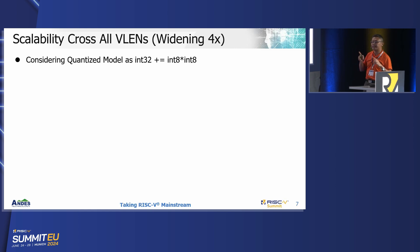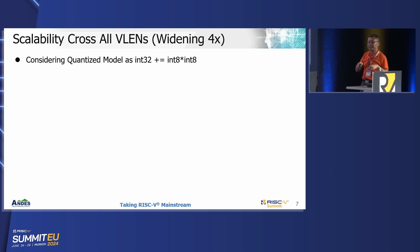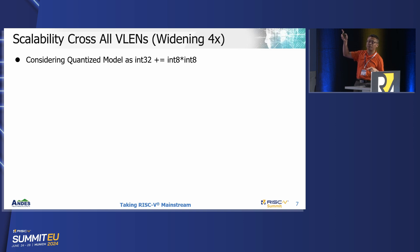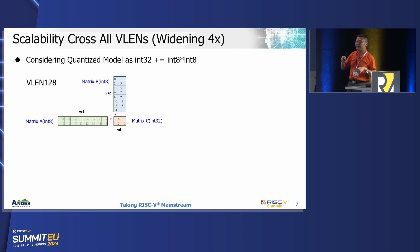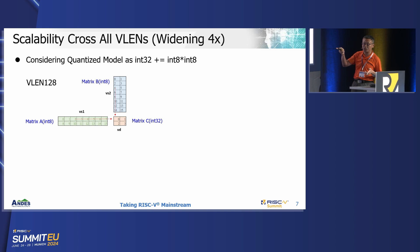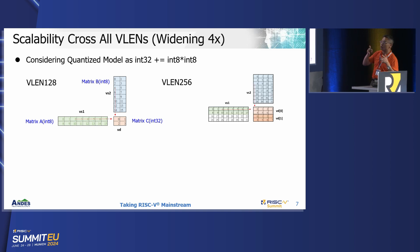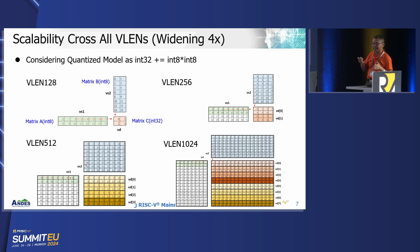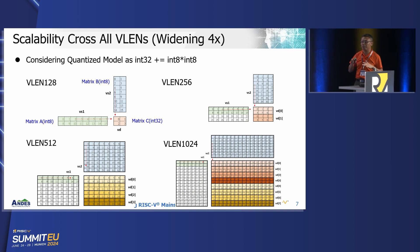Not only single precision but also mixed precision can be supported based on this instruction set. For example, taking a general quantized AI model with INT8 convolution widening 4x to INT32 — you commonly find matrix multiplications designed this way. You can apply this rule to longer VLEN, as shown at VLEN 512, making it easy and straightforward to migrate your source code to different VLEN machines.